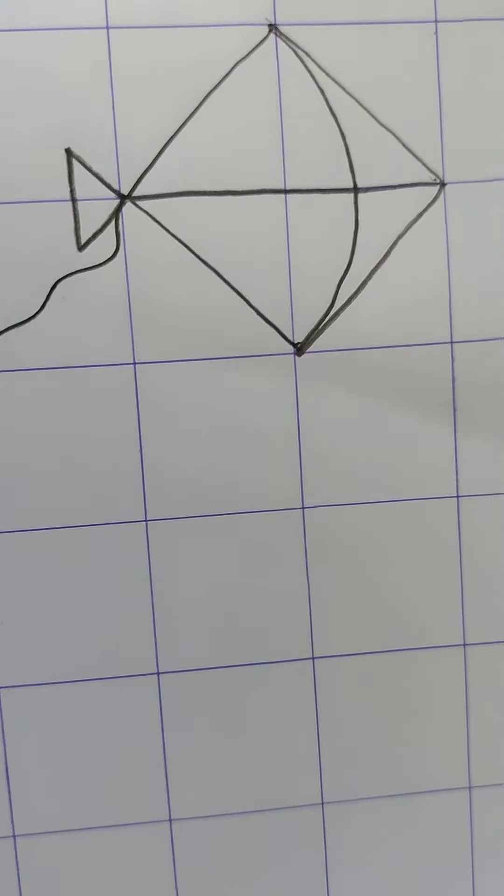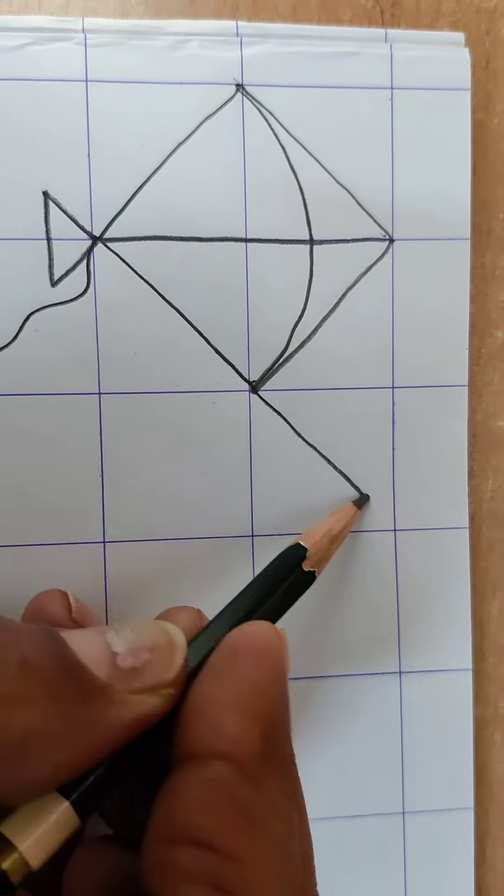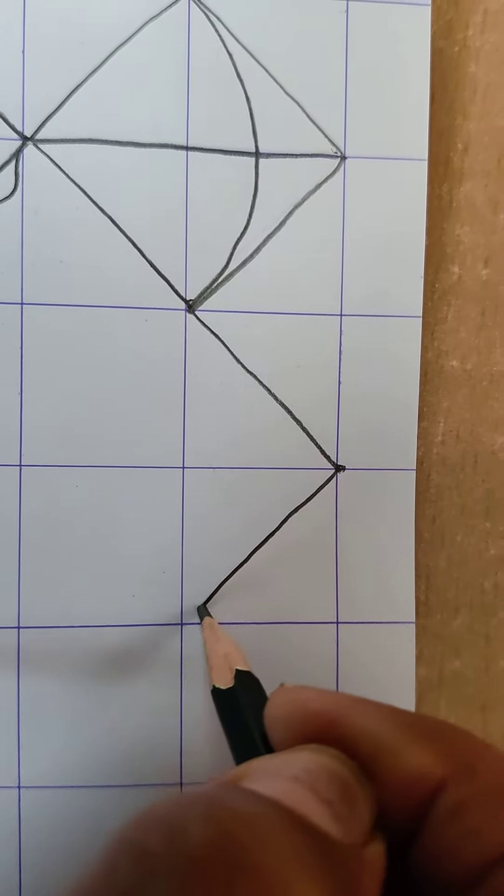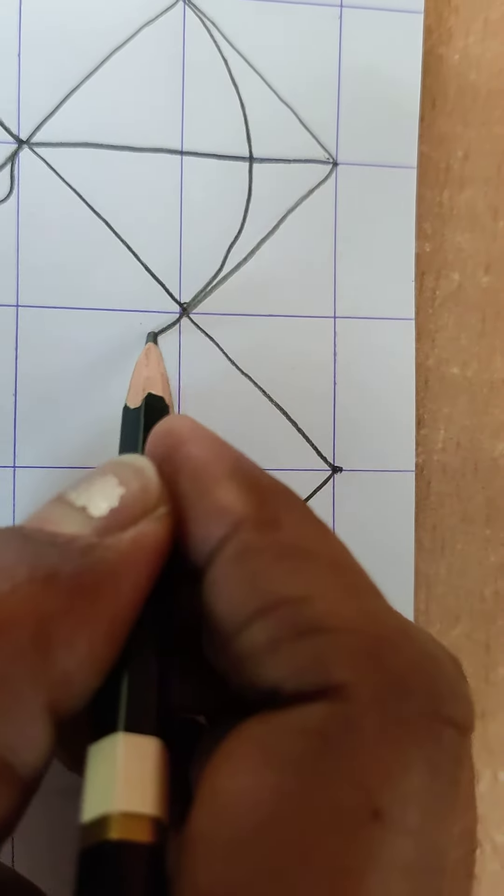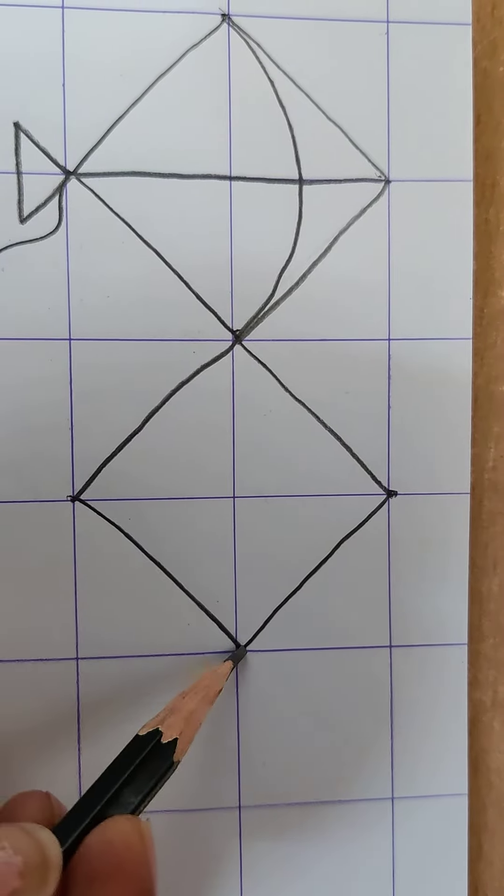Like this you have to make kites. In first line you will complete by making kites in four four squares like this. Okay.